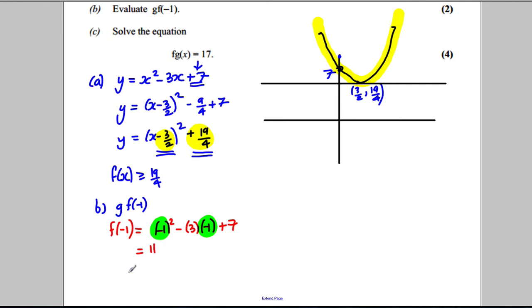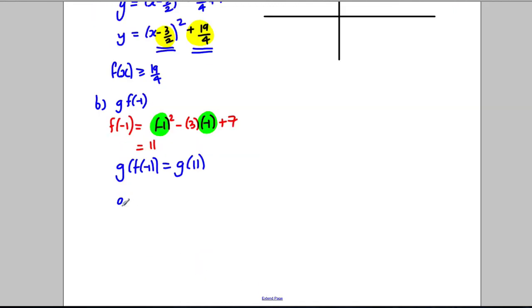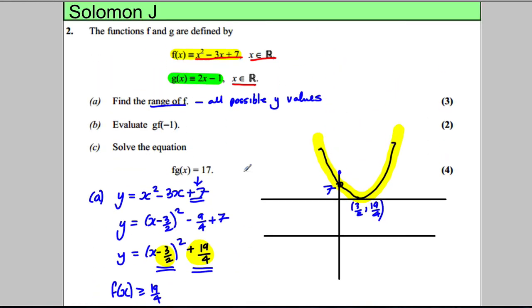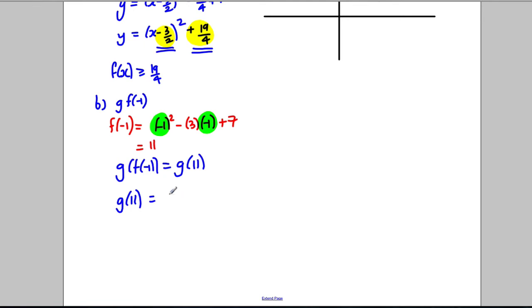So therefore g(f(-1)) is actually the same thing as g(11). So all I need to do is go away and work out g(11), i.e., substitute 11 up here. So 2 multiplied by 11 take away 1, so 2(11) take away 1, which is 22 take away 1, which is obviously 21. So g(f(-1)) is equal to 21.